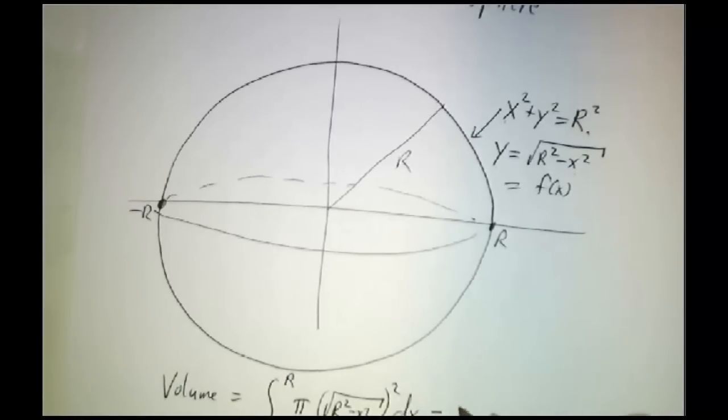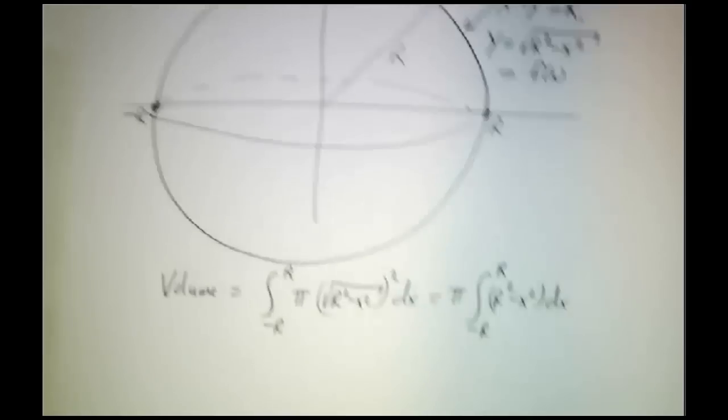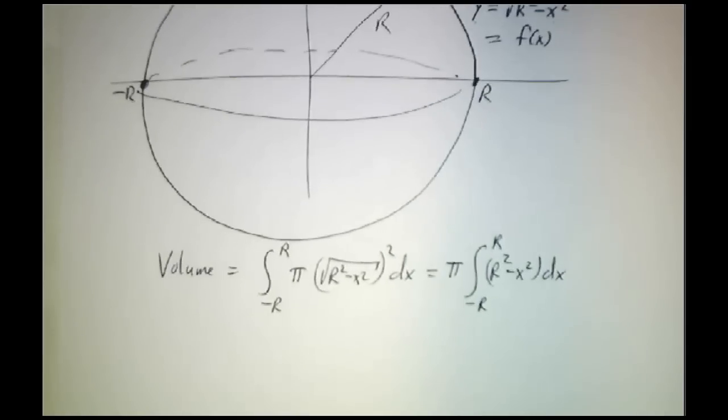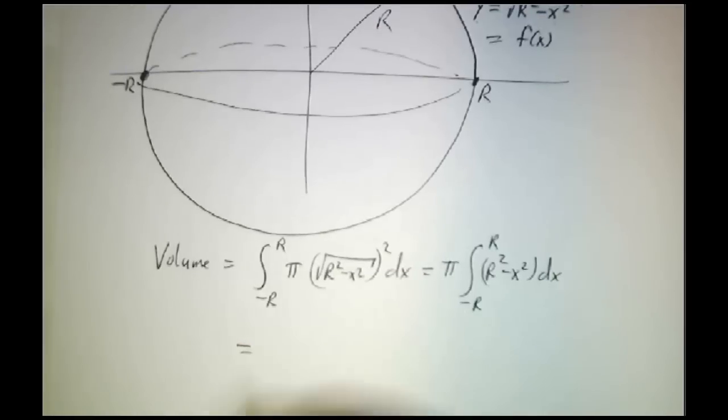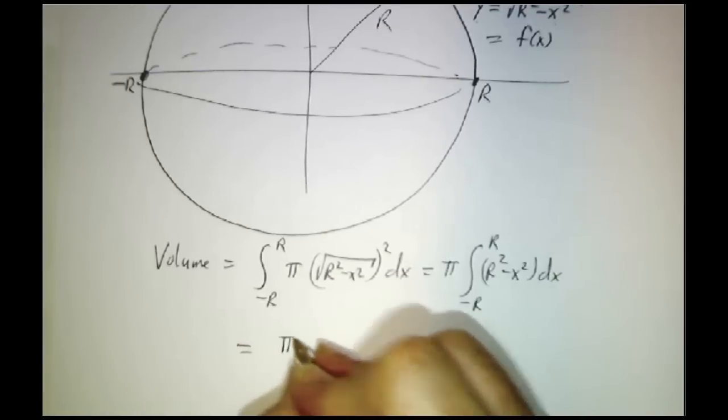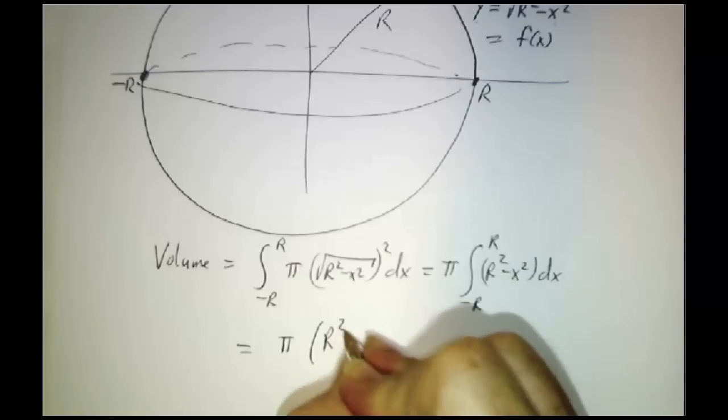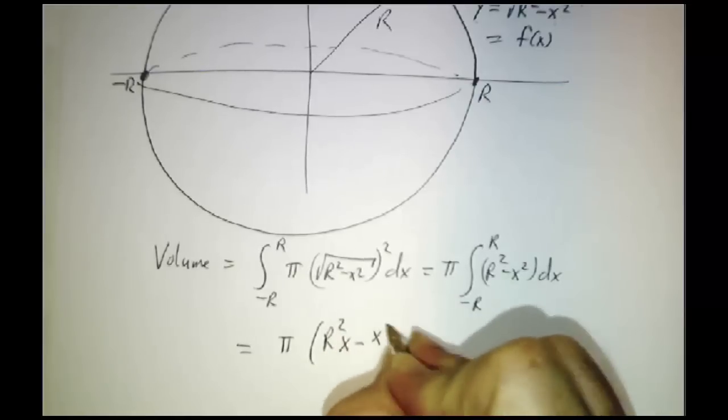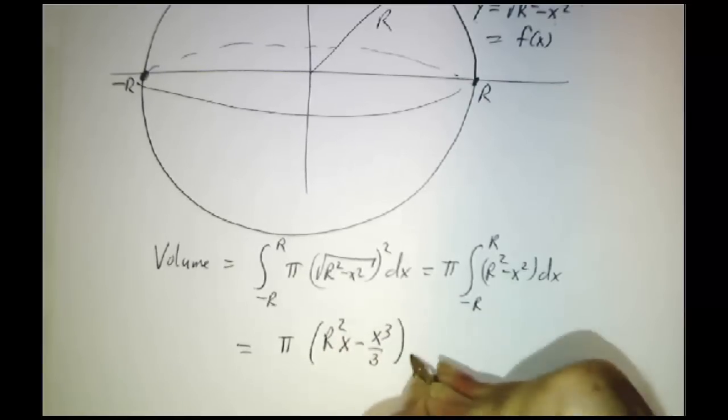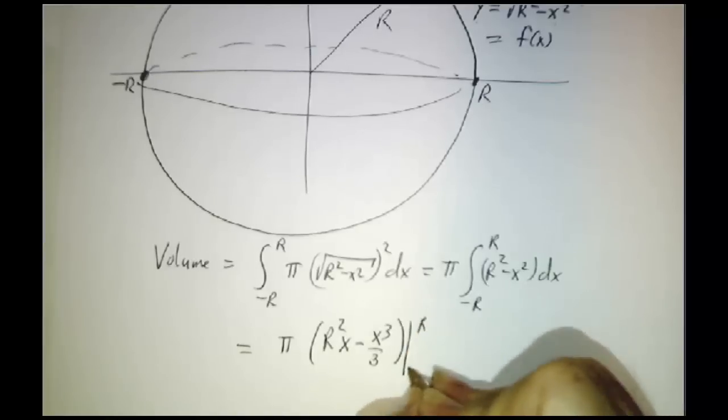So that's, we'll pull the pi out and it will be minus r to r of r squared minus x squared dx. And that isn't too hard.